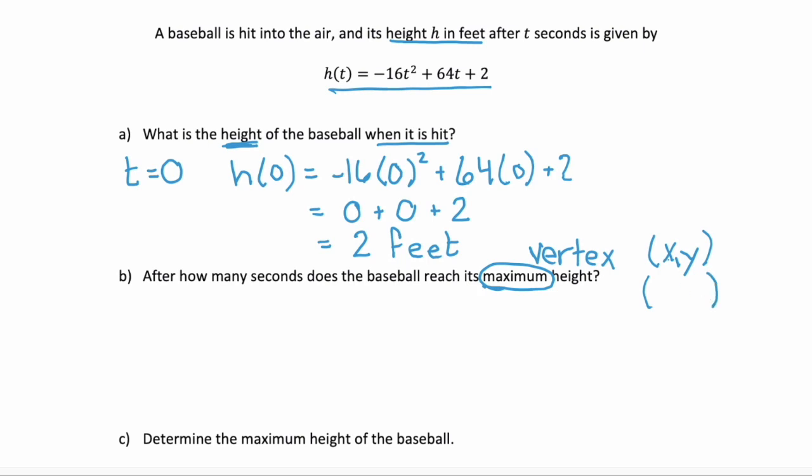Well, x is always the variable that is your input. And here our input is time t. And y is your output. And for us, that's h. So after how many seconds, that's time. So we're trying to find the x value of our vertex. And to find the x value, you use negative b over 2a.